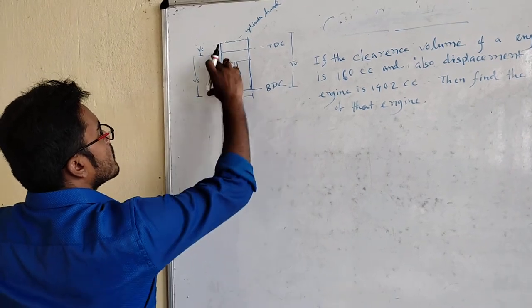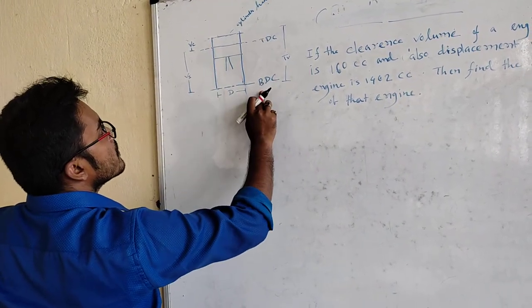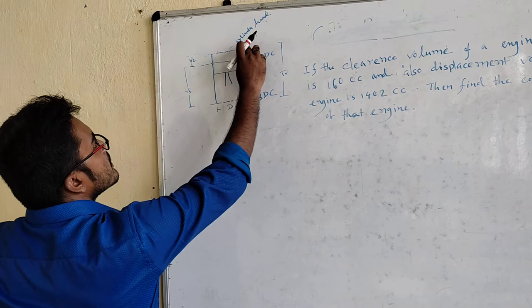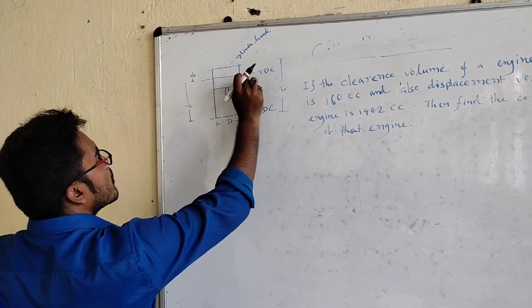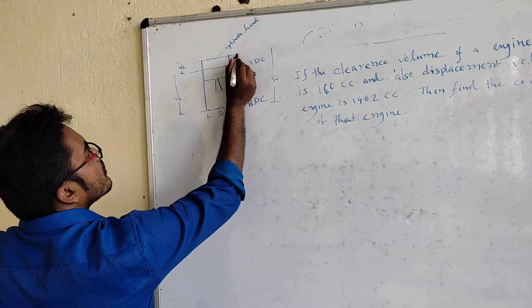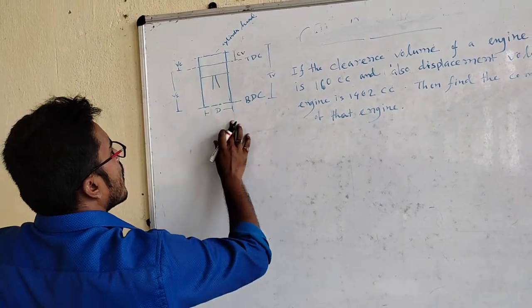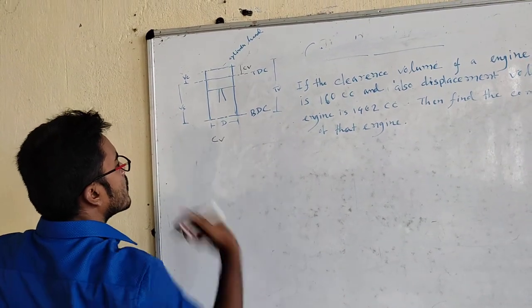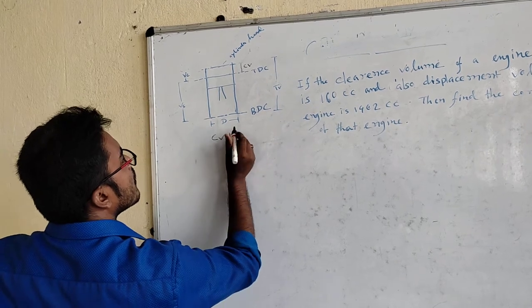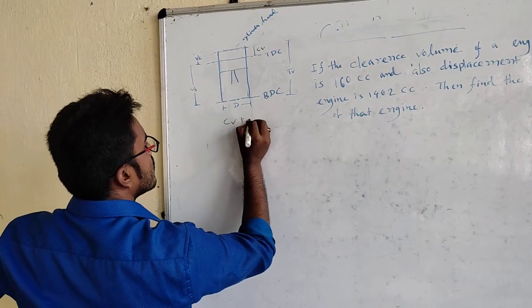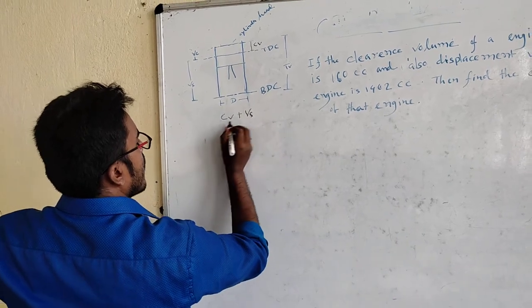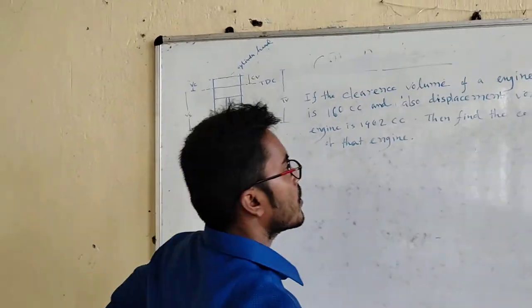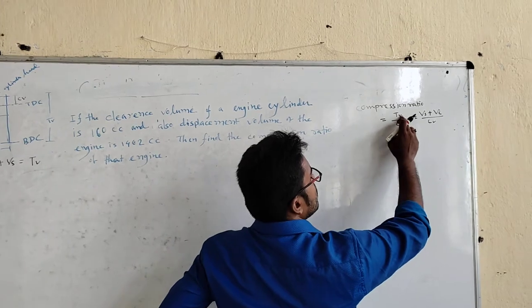In this section, we have the swept volume VS and total volume. The compression ratio is total volume by clearance volume.